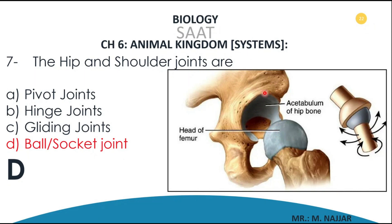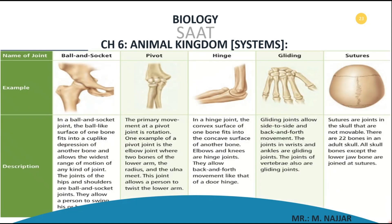This is the hip bone — the pelvis — and the shoulder joint works in the same way. There is a ball and a socket, and at that articulation it can move in a wide range of movements. In ball and socket joints, the ball-like surface of one bone fits into a cup-like shape of another bone, allowing the widest range of movements of any joint type.